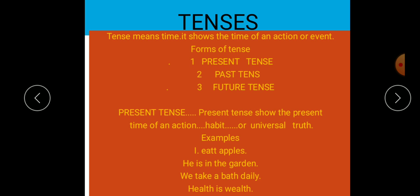Okay, clear? Yaani ki verb ki jis shakl se hume yeh pata chale ki kam kab hua hai, usse tense kehte hain. Aur present tense se hume kya pata chalta hai ki kam abhi ho raha hai.